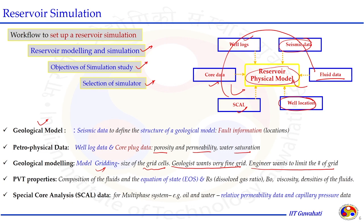Third is PVT properties. The number and types of fluids present determine the PVT behavior in terms of equation of state or other parameters that need to be included. For example, dissolved gas ratio, formation volume factor, viscosity, and density of the fluid present. The viscosity and density of the fluid should be provided in terms of PVT properties. Special core analysis (SCAL) data for the multi-phase system also requires relative permeability of different fluids present in the domain and capillary pressure information.